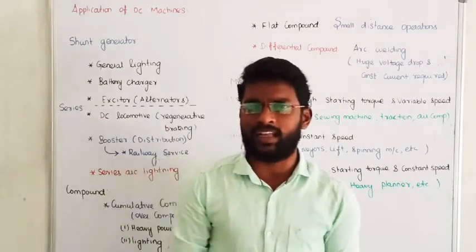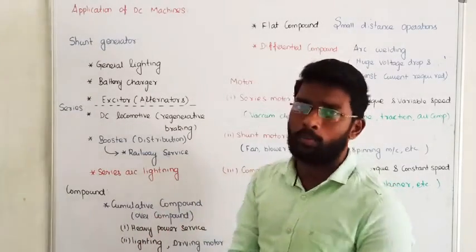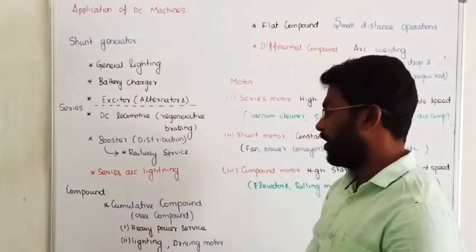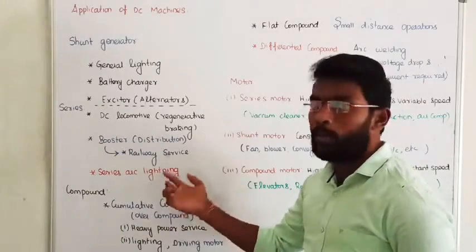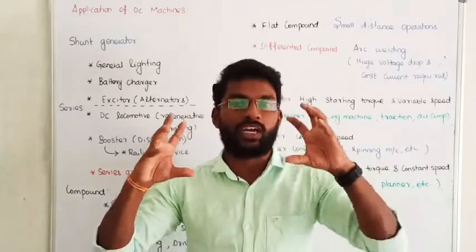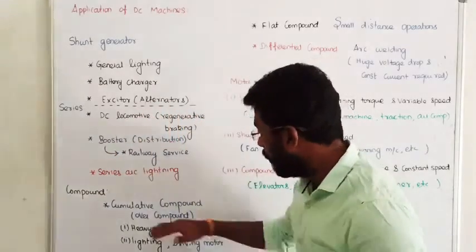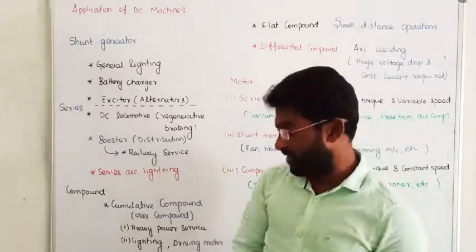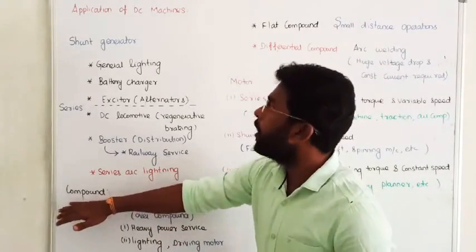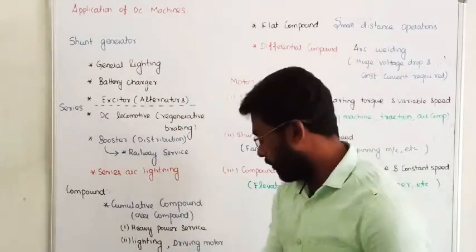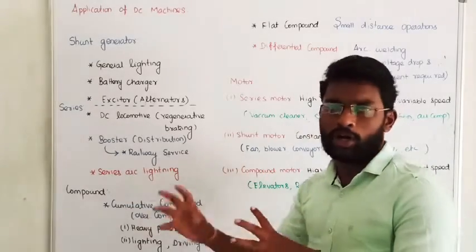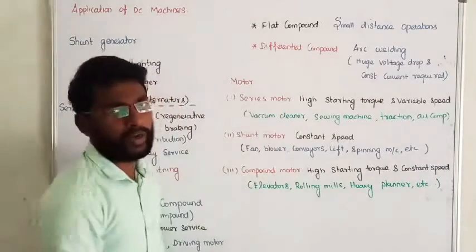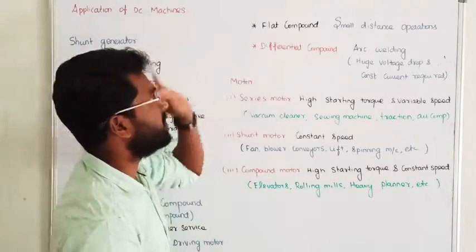Cumulative Compound is further classified based on characteristics into three categories: Over Compound, Flat Compound, and Under Compound. In the case of Cumulative Compound design, the Series Field and Shunt Field are both aiding. These kinds of machines are used in heavy power services. We are designing Cumulative Over Compound Generators for heavy power equipment and lighting purposes. I will explain more about these things in the characteristics section.